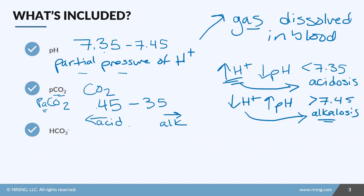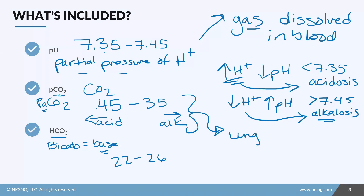The third value is bicarb, or bicarbonate, also written HCO3. Bicarb equals base — anytime you think bicarb, correlate it with base. The normal bicarb value is 22 to 26. CO2 is regulated by our lungs — every time we breathe out, our lungs expel CO2. Bicarb, on the other hand, is specifically regulated by our kidneys, which will excrete or retain it as needed. So CO2 is acid, bicarb is base.